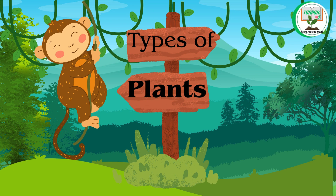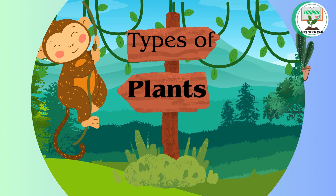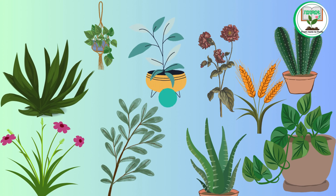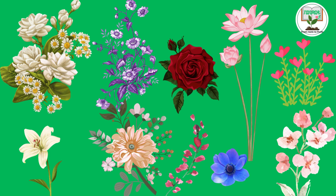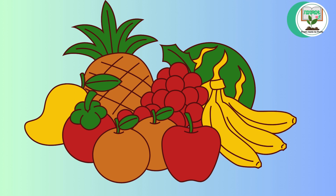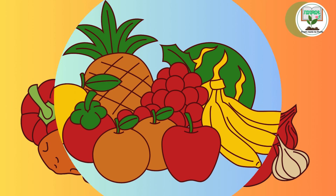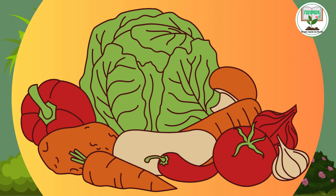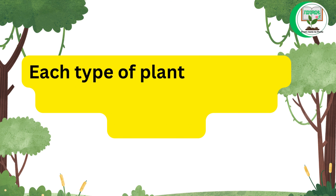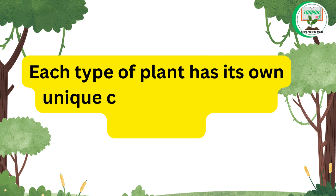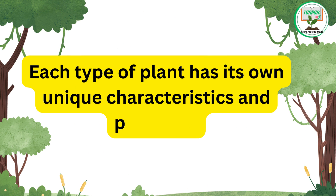Types of plants: there are many different types of plants, including flowers, fruits, vegetables, shrubs, and trees. Each type of plant has its own unique characteristics and purposes.